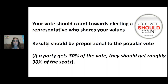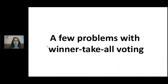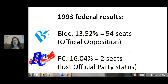Looking at the 1993 federal election, the Bloc Québécois and the Progressive Conservatives got almost the same popular vote. However, one of those parties became the official opposition, while the other only got two seats and lost their official party status.